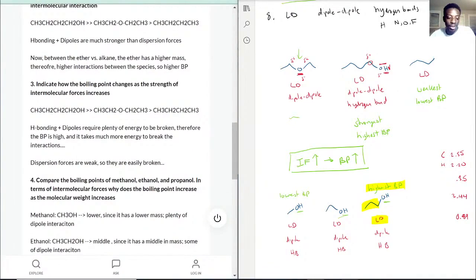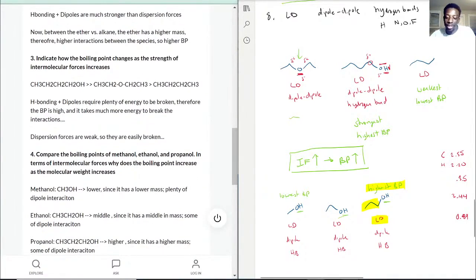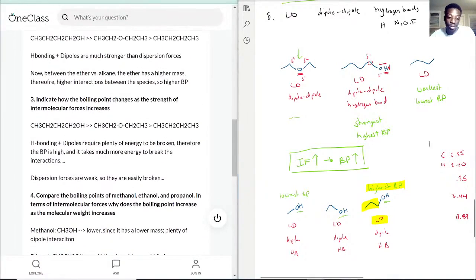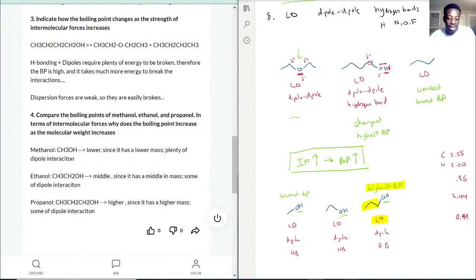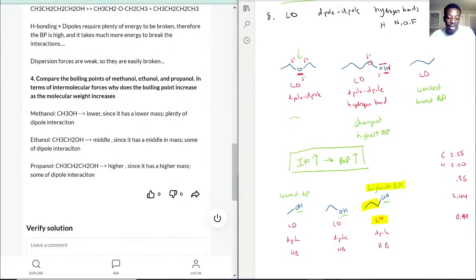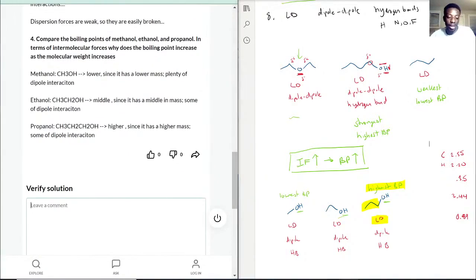They did rank them correct. They said that the ether has a higher mass, therefore higher interactions. Although it is a bit of an increased mass, oxygen is 16—not the biggest change—so I'll definitely rely more on that dipole-dipole interaction. They still have the right idea, just attributed more to mass than London dispersion forces.